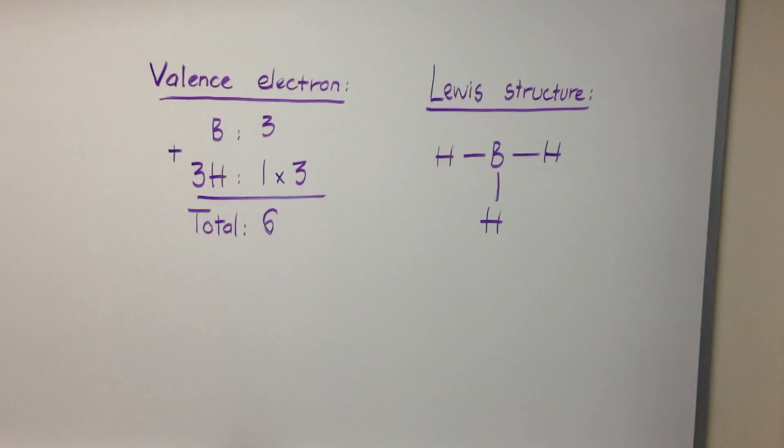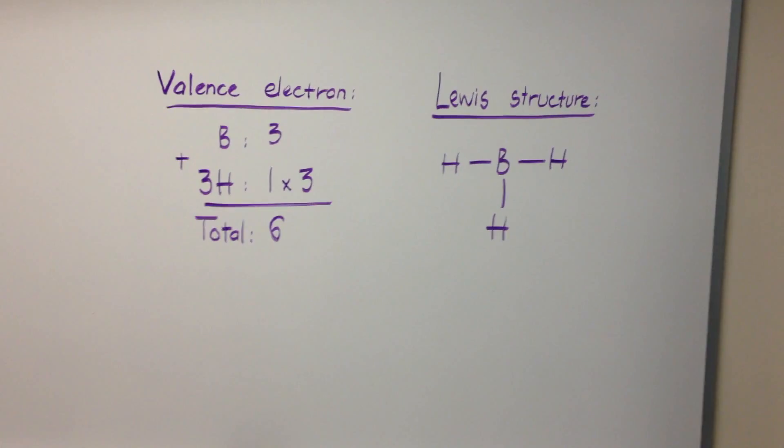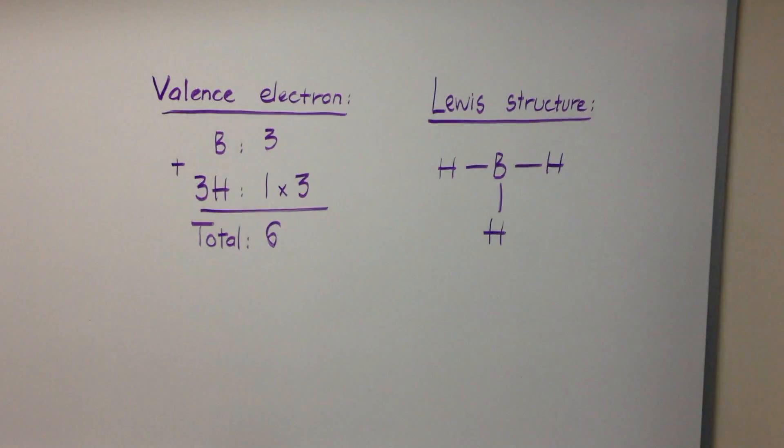Therefore, boron will not be able to complete its octet because even though all six electrons contribute to fill boron's valence orbitals, two additional electrons will be required to complete the p orbitals.